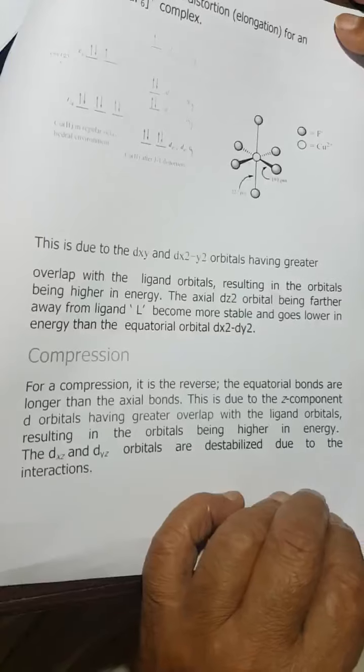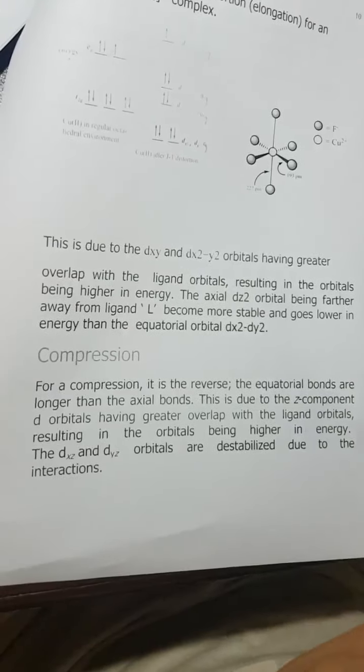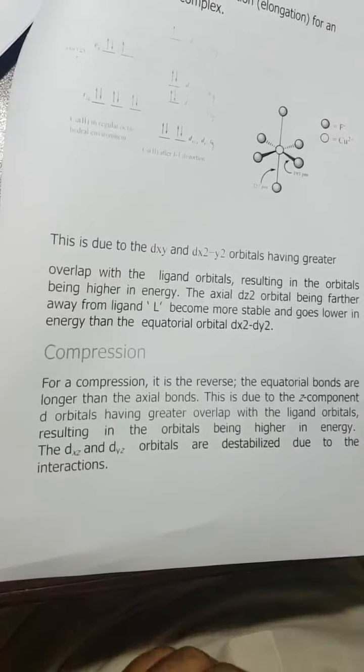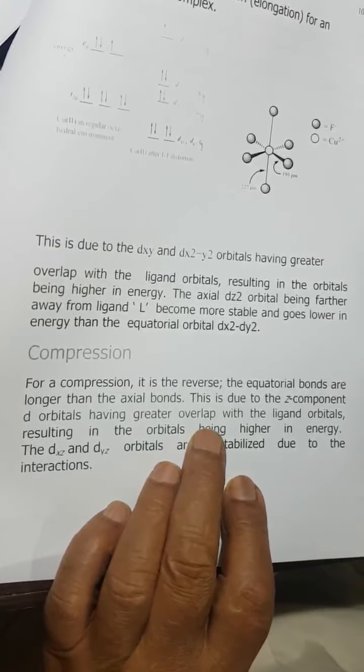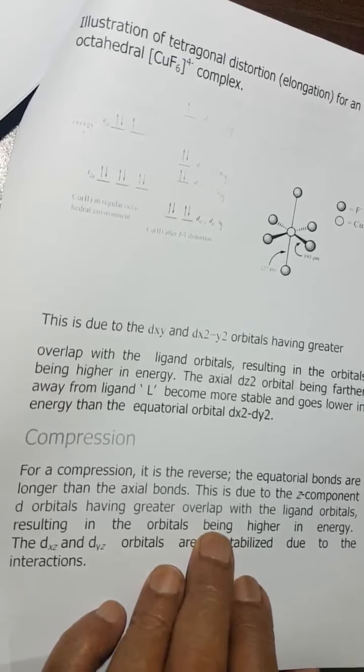This is due to the Z component d orbital having greater overlap. The ligand comes much closer to the metal and there is more overlap.